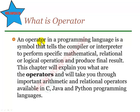An operator in a programming language is a symbol that tells the compiler or interpreter to perform specific mathematical, relational or logical operations and produce final result. We have to use this operator. Important is that arithmetic and relational operators are the same in C, Java and Python.